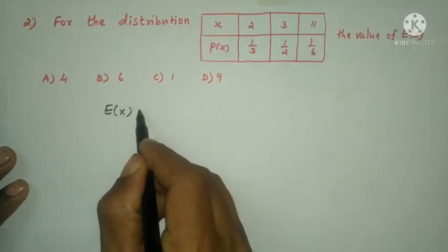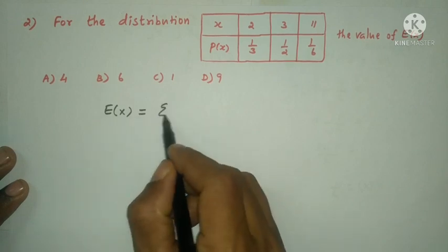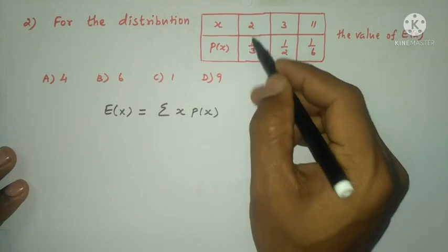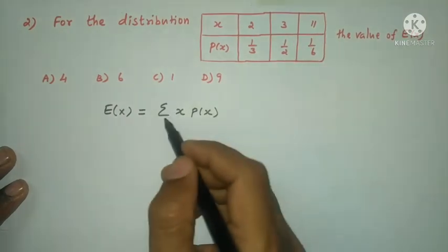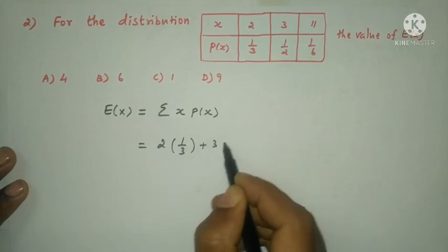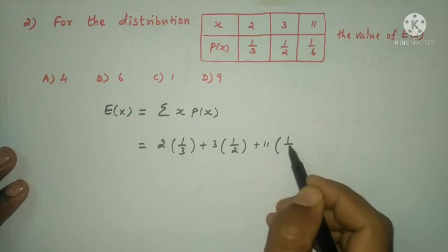E of x means expectation of x, so it is the mean. The formula is summation x into p of x. That is, 2 into 1 by 3, plus 3 into 1 by 2, plus 11 into 1 by 6.